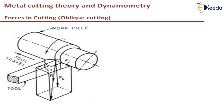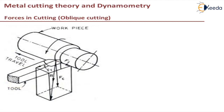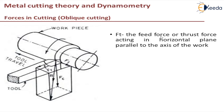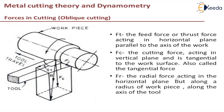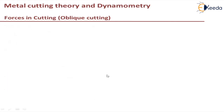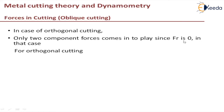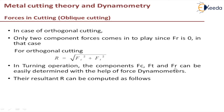In oblique cutting, there is one more force added — the radial force Fr. Along with the feed force and cutting force, we must consider radial force. In orthogonal cutting, Fr is zero, so the resultant force is the square root of FC squared plus FT squared. Whereas in oblique cutting, the resultant force is the square root of FC squared plus FT squared plus Fr squared. You cannot easily do analytical analysis for these forces in oblique cutting; you can directly use dynamometers to measure these forces and the resultant force.